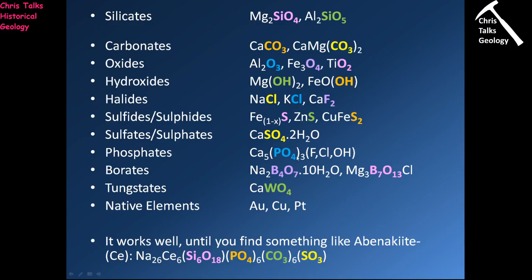Phosphates have the PO₄ group, whose composition never changes. Borates involve boron bonded to oxygen, where the amounts of boron and oxygen vary, so you look for a metal bonded to a boron-oxygen group. Tungstates have the WO₄ group. Native elements are simply metals that occur by themselves — gold, silver, copper and other elements that don't bond to any of these groups.